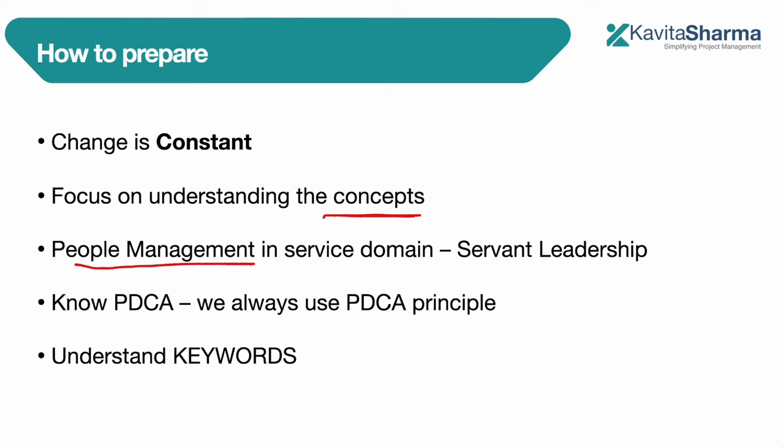Have a strong understanding of people management, specifically servant leadership. Know PDCA — Plan, Do, Check, and Act. We plan for things, do the work, check and act. We apply PDCA in hybrid, predictive, and normal agile processes. It is the underlying principle for scope, iteration, scheduling — whatever you name it. Also try to identify keywords in any definition — every definition has a keyword. If you know that, you'll be on a path to success for the PMP exam.